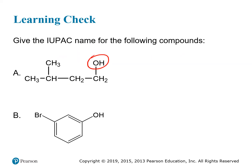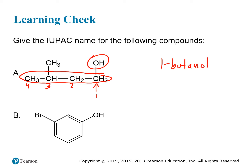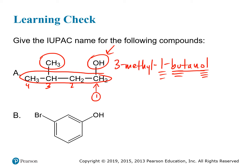Here we have an OH attached to a four-carbon chain. The OH is on the very end carbon, so we start counting with that as number one, making this 1-butanol. There's also a methyl group on carbon three, so the full name is 3-methyl-1-butanol.